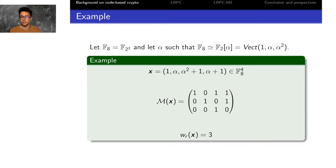We can immediately see that the rank weight of x is 3, which is different, as you can notice, than the Hamming metric, which would be 4 in that example.